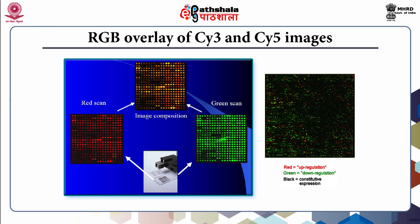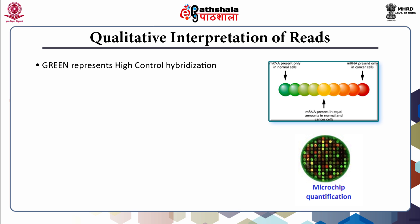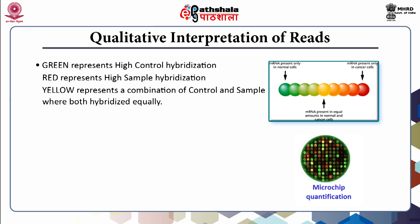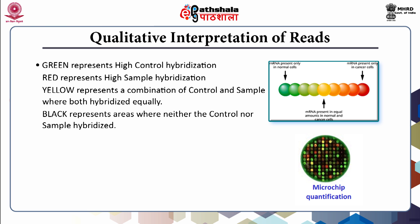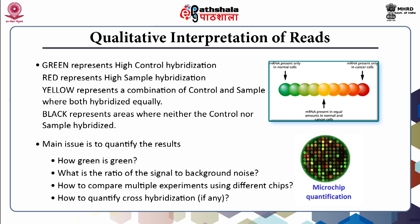The qualitative interpretation of reads: green represents high control hybridization, red represents high sample hybridization, yellow represents a combination where both control and sample have hybridized equally, and black spots represent areas where neither control nor sample has hybridized. For quantitative interpretation of reads, we need to understand how to quantify the amount of color achieved after overlay — how green is the green, the ratio of signal to background, how to compare multiple experiments using different chips, and how to quantify cross-hybridization if any.